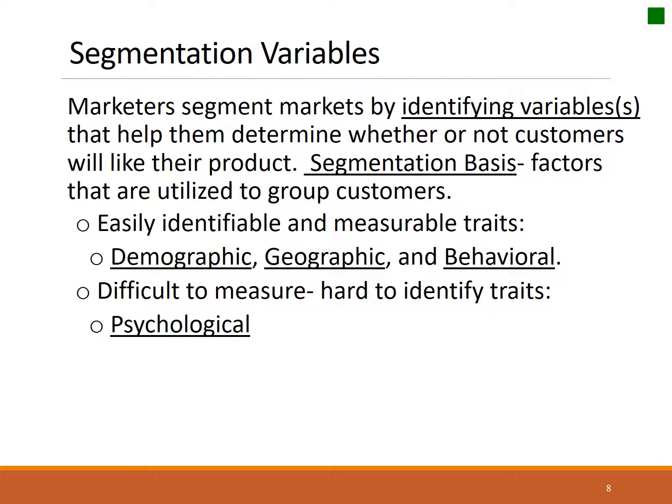Much harder elements to measure are psychographic or psychological factors, such as people's attitudes, behaviors, beliefs, and their outlook on life. Feelings and emotions are very difficult to measure because they're not directly observable, and from a research perspective they're just harder to measure in general. Psychological or psychographic variables tend to be very powerful because they talk about people's lifestyles. We'll often use a combination of demographic, geographic, behavioral, and psychological characteristics to group our consumers.